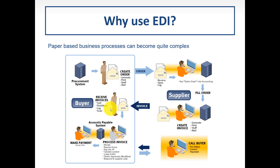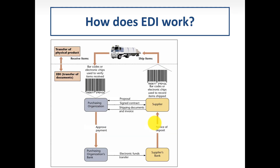The invoice is received by the buyer, who then types it into the accounts payable system. At the same time, the supplier contacts the buyer to arrange for payment. As you can see, there are plenty of opportunities for errors — a lot of hands involved in the ordering and invoicing process. It doesn't have to be like this.